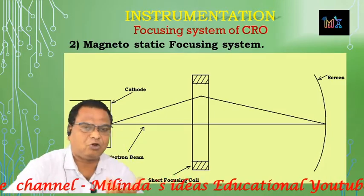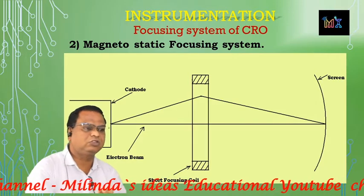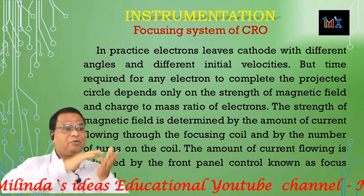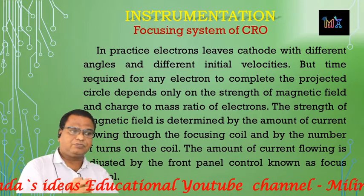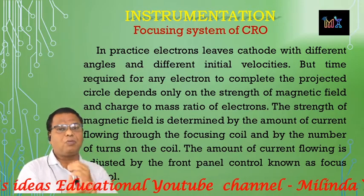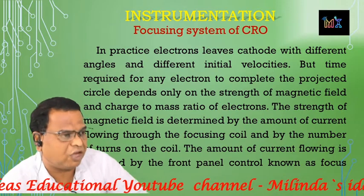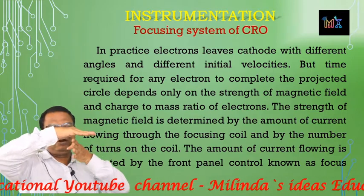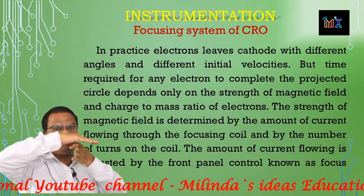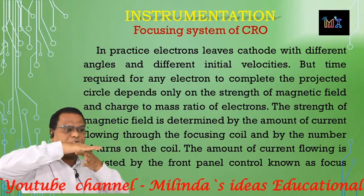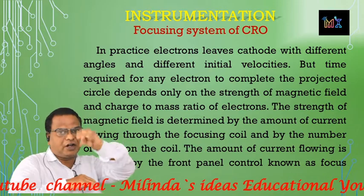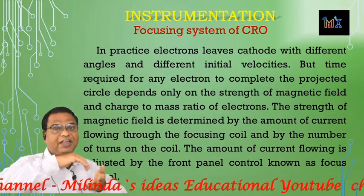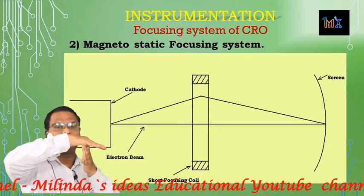The focusing of the electron beam depends on the charge-to-mass ratio of the electrons and the strength of the magnetic field. The strength of the magnetic field determines how much force is exerted on the electron beam. The amount of current applied to the electromagnet decides how strong the magnetic field is and how much focusing force is applied to the electron beam.